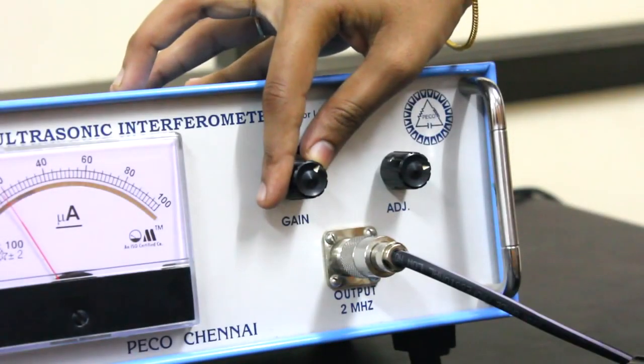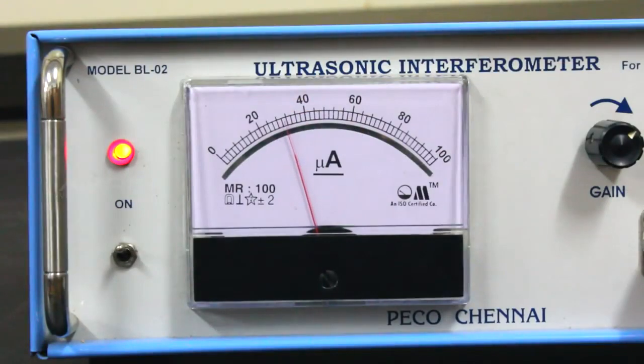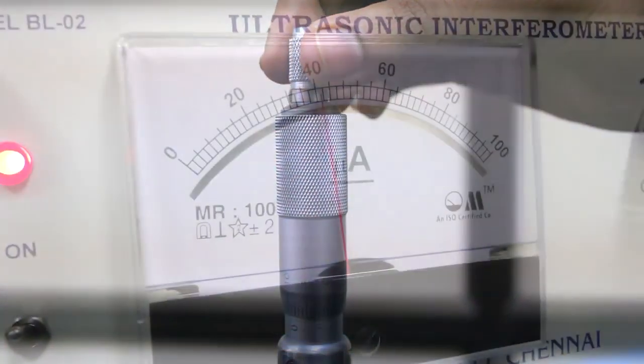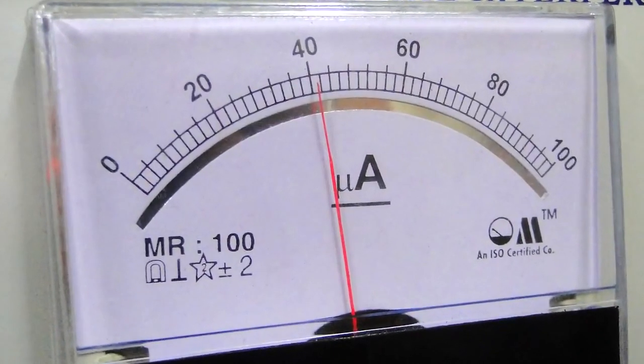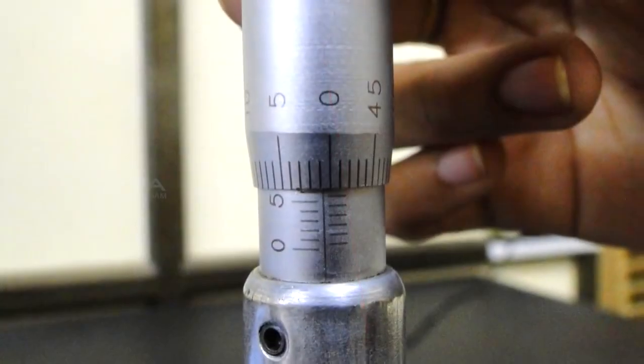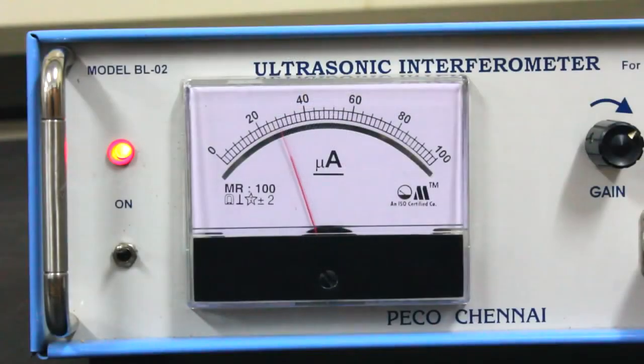When we move the micrometer, the anode current begins to increase. Move the micrometer, then at a particular distance the anode current becomes minimum. Note down the anode reading and micrometer reading. Repeat the procedure till we get at least 10 maxima and minima.